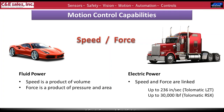Looking at Tolomatic rod cylinders alone, we can achieve up to 236 inches per second with an LZT actuator — it uses a belt inside the actuator to move a rod, nicknamed the 'lizard tongue.' It's very quick, but doesn't make anywhere near the forces of something like the Tolomatic RSX, which gets all the way up to 30,000 pounds of force. We often have to look at the application to find where the electric actuator will meet production requirements.